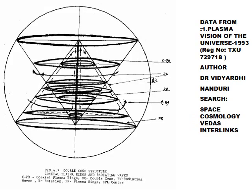This Plasma Vision of the Universe tries to integrate electromagnetic fields and frequencies and plasmas from laboratories to new modeling that is required for the vision of the universe. This picture shows a double cone structure, and one can see the coaxial plasma rings and radiating waves. The data is reproduced from the book Plasma Vision of the Universe.